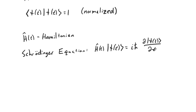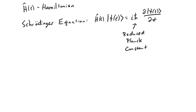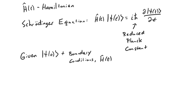So more explicitly, the problem we're solving in quantum mechanics is: we're given psi at some initial time plus some boundary conditions, and we're given the Hamiltonian as a function of time, and we want to find psi for all future times. The way we do this is by solving the Schrödinger equation. And that's all there is to it.